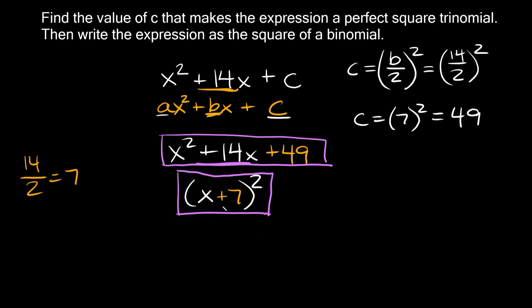If you wanted to check your answer all you'd have to do is multiply this out. So x plus 7 squared is the exact same thing as x plus 7 times x plus 7. Here we would just have to FOIL, so we'd do first is x squared, outer is plus 7x, inner is plus 7x, and last is 7 times 7 which is 49. And then if we combine like terms, 7x plus 7x is 14x, so then again we get x squared plus 14x plus 49.